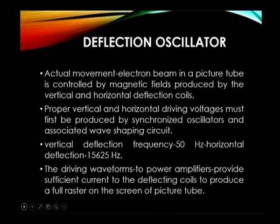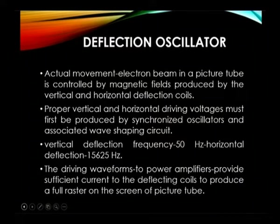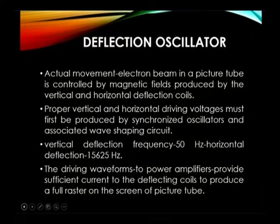The deflection oscillator is used to produce an output that is very useful for the deflection coil. The output from the amplifier is useful for creating the magnetic field. The magnetic field depends on the amount of current produced by the amplifier. The proper vertical and horizontal driving voltage must first be produced by synchronized oscillators and associated wave shaping circuits. So there are two things in a deflection oscillator: one is wave shaping circuit and another is oscillator. These two provide proper voltage for horizontal and vertical signals.